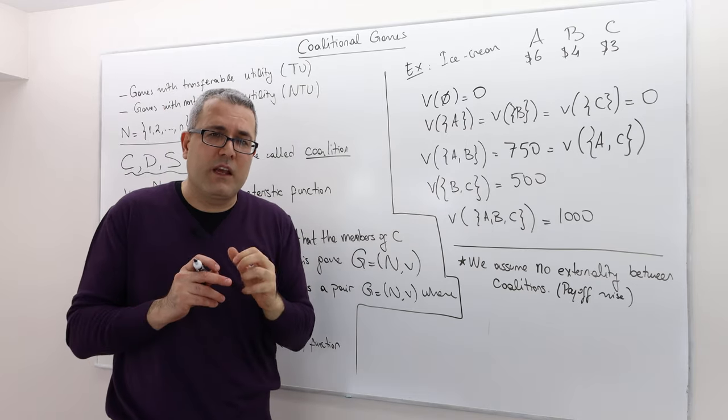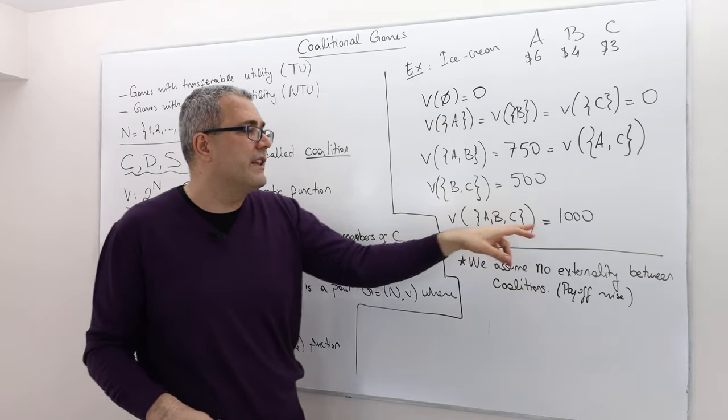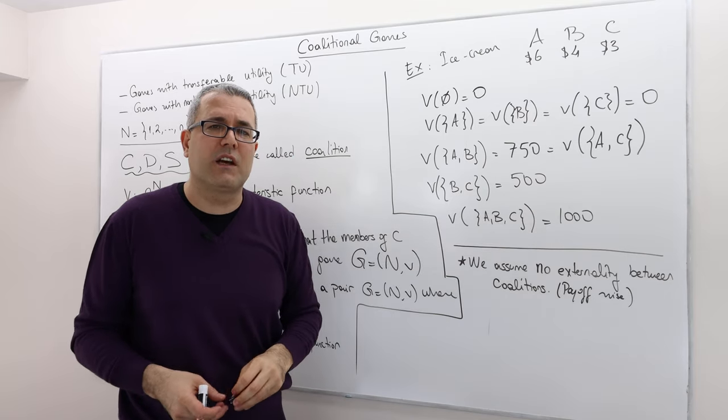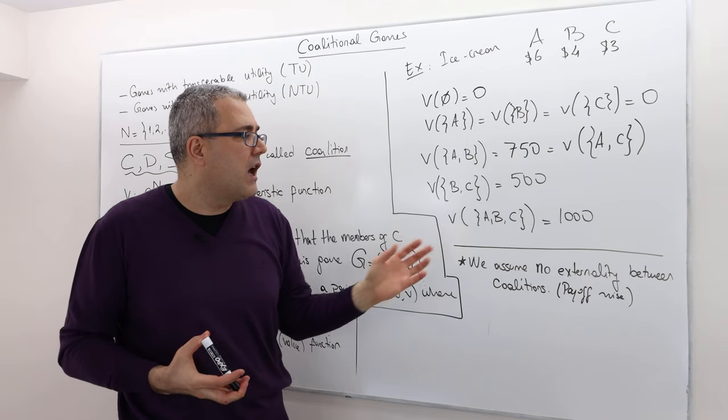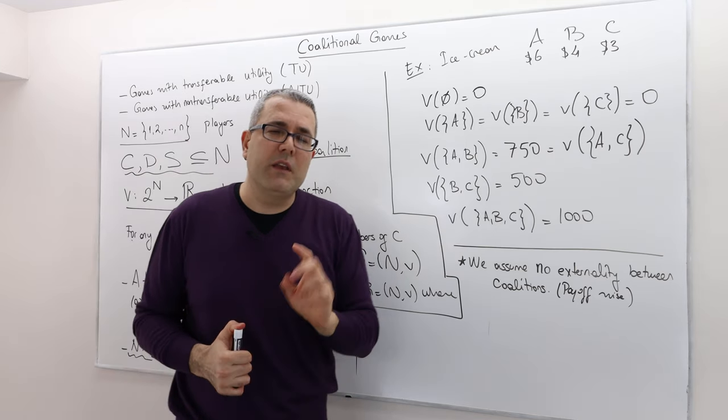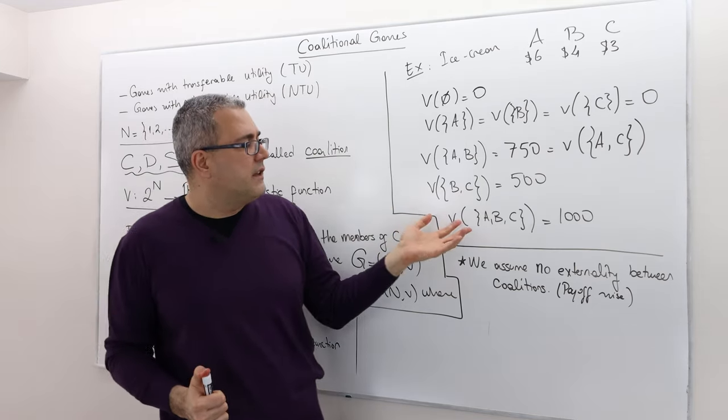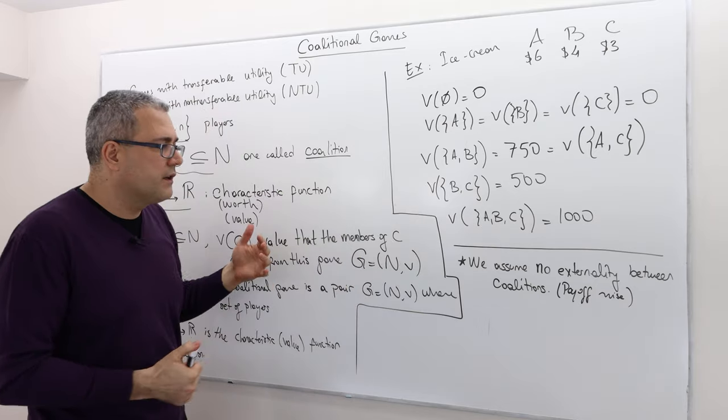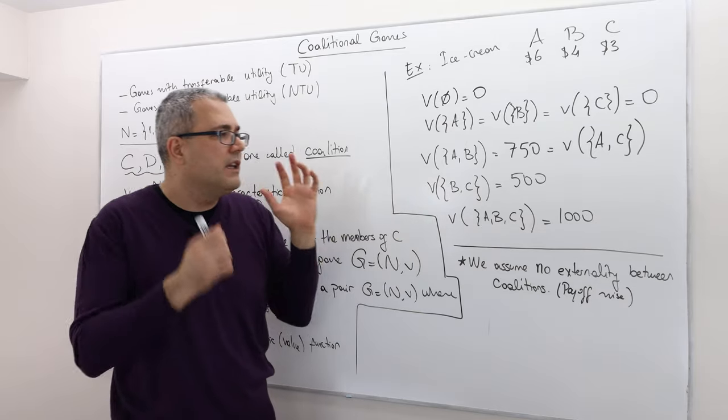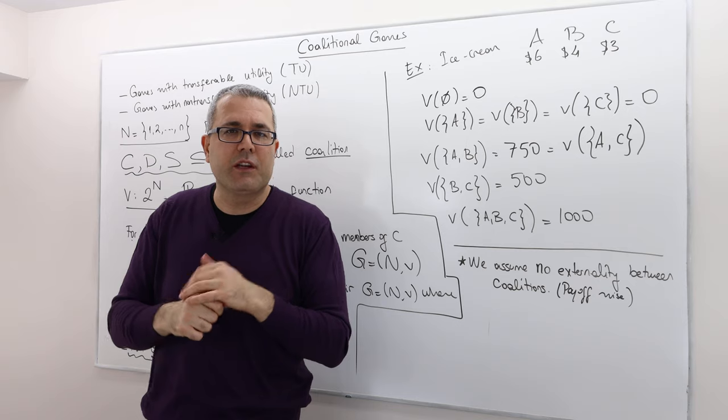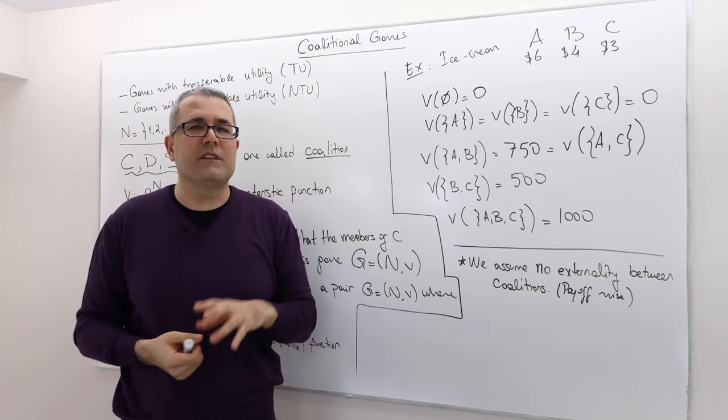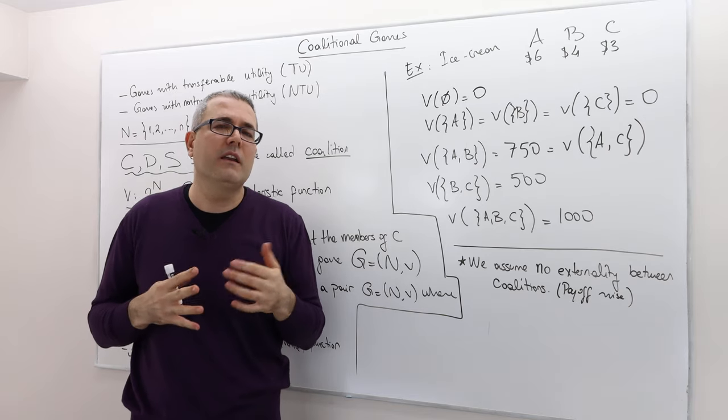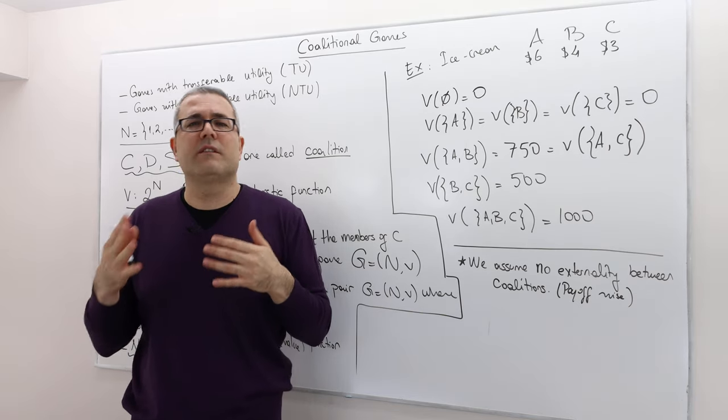And if you remember, if they all three get together and pool their resources, they can now afford the biggest size, 1000 grams of ice cream. And so v is basically how much ice cream they're gonna get. So here, these value functions or the worth functions are just mapping each coalition into how much ice cream they get. But for simplicity, you can assume that this is exactly what these players care. The more ice cream they get, the happier they're gonna get.